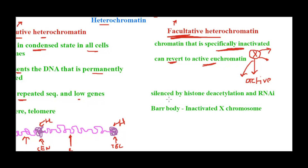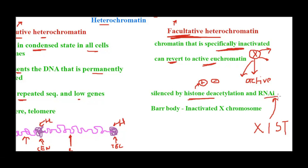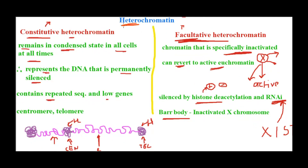The mechanism behind this condensation and silencing involves histone deacetylation: the positive charge of histone is regained, creating a tight binding with the negatively charged DNA, resulting in a compact heterochromatin form. In the case of X chromosome inactivation specifically, the mechanism involves XIST RNA — an RNA that goes and binds to the chromosome, which is essentially RNA interference — and that is how facultative heterochromatin is maintained.